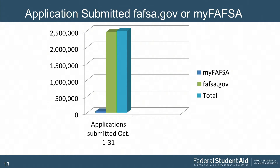Looking at applications submitted on FAFSA.gov versus the mobile app, of about 2.4 million total applications, about 98% came from the web, but a mighty 38,464 came from the mobile app. While this looks like a small margin, we have to take ourselves back to when we were converting from paper to web — that was a slow process that happened over time. Users are finding out about the mobile app from partners like you, and we want to thank you and ask you to continue that push so next year we can see that number grow.